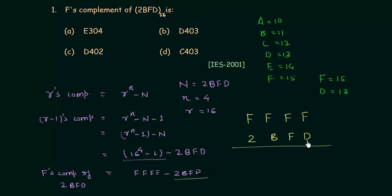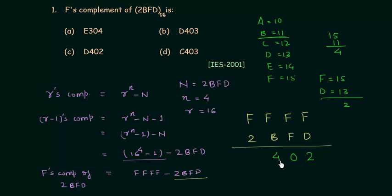We have to subtract d from f: f minus d is 15 minus 13, so we get 2. f minus f is 15 minus 15, so we get 0. f minus b is 15 minus 11, which gives us 4. f minus 2 is 15 minus 2, which gives us 13, and 13 is d. So the result is d402.